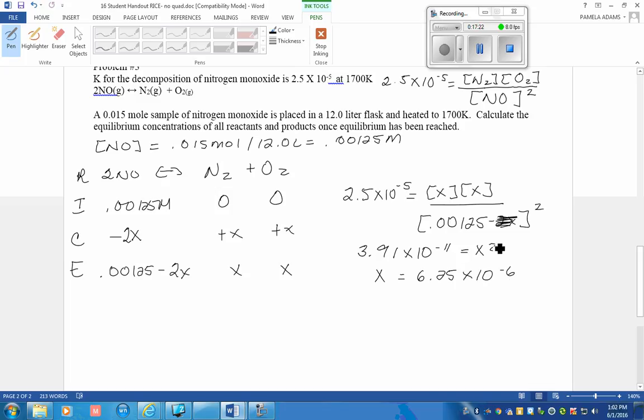And now that allows me to figure out the equilibrium concentrations of all of my reactants and byproducts. So N2 started at 0.00125 molar, and from that I'm going to subtract 2 times the value of X. And that will give me an ending amount or the equilibrium amount of NO to be 0.00124 molar. N2 equals X, which is 6.25 times 10 to the negative 6, and so is O2.